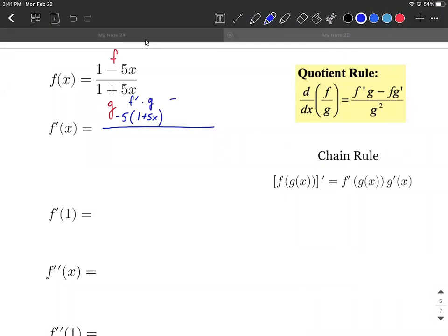Subtract away, we copy down f, so 1 minus 5x. And then we take the derivative of g, so the denominator there. The derivative of 1 is 0, and then we have the derivative of 5x is just going to be 5. And then this is all over the derivative squared, so 1 plus 5x raised to the second power.